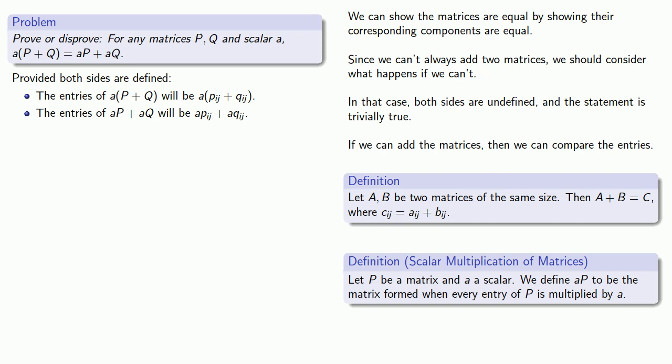And so now we have the entries of a times (P + Q). We have the entries of aP + aQ and we can compare them. And we see that the entries are in fact equal and so our matrices are equal.